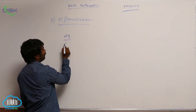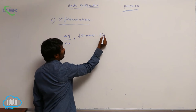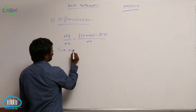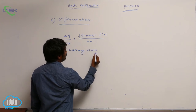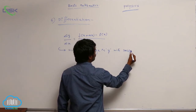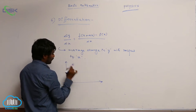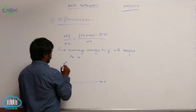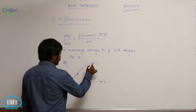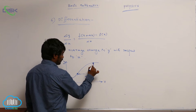The last formula we derived is delta y by delta x, equal to f of x plus delta x minus f of x, divided by delta x. We call this the average change in y with respect to x. In a graph, if y is a function of x, this value is delta x — the change in x — and this is delta y — the change in y.